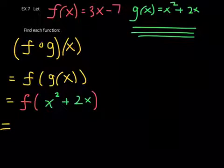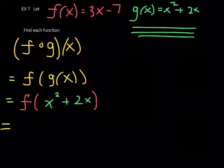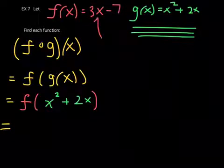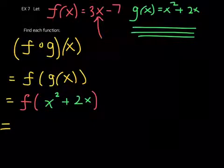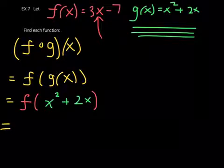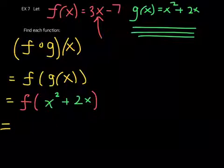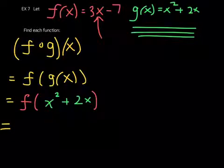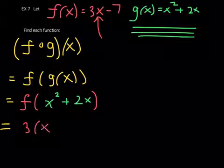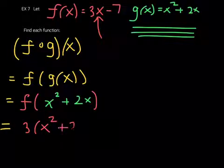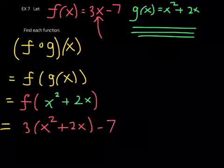Now, when you look at function f, I'm going to draw your attention up here. This is your input value right there. So you are replacing that input variable x with the expression x squared plus 2x. So you know how your function f reads 3 times x minus 7? Well, now it'll be 3 times x squared plus 2x minus 7. In other words, it'll look like this: 3 times x squared plus 2x, and then don't forget, minus 7.